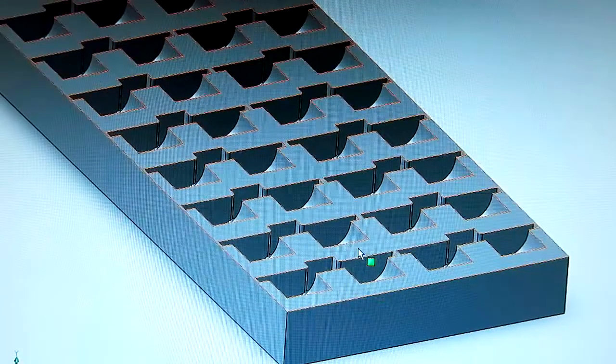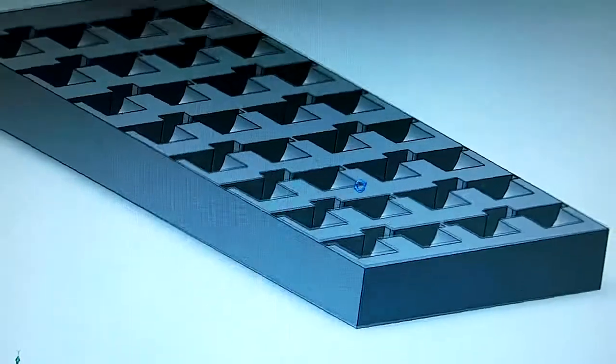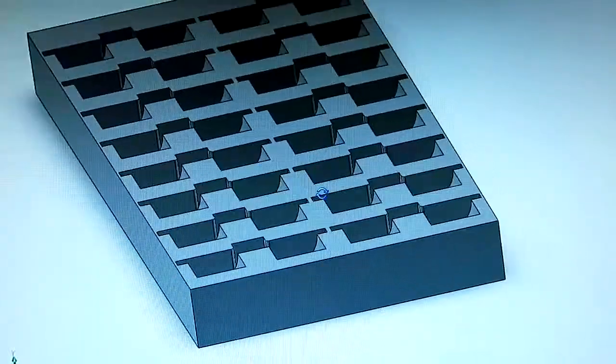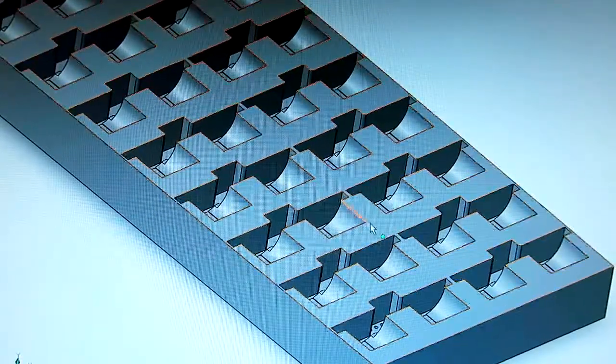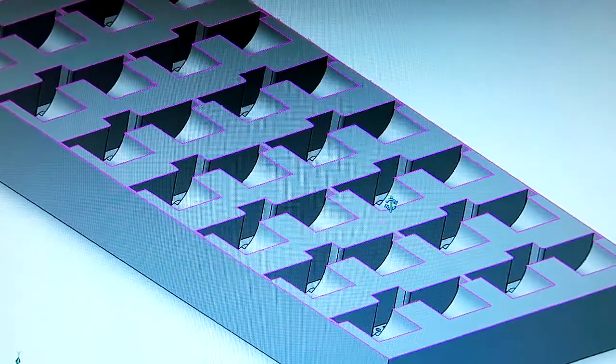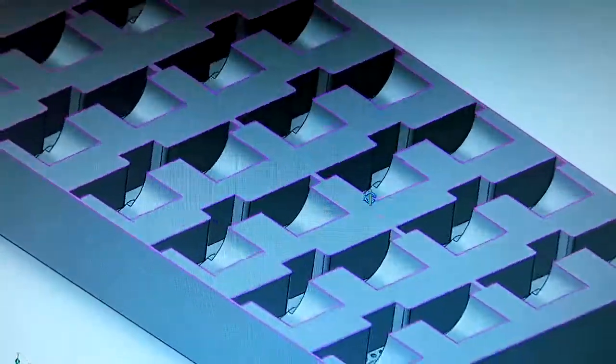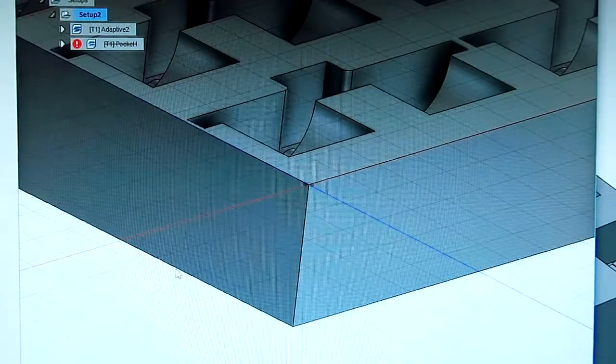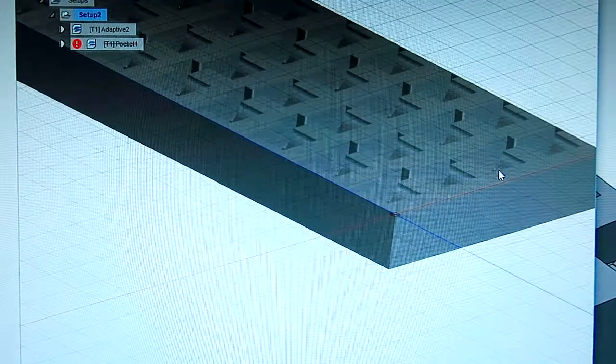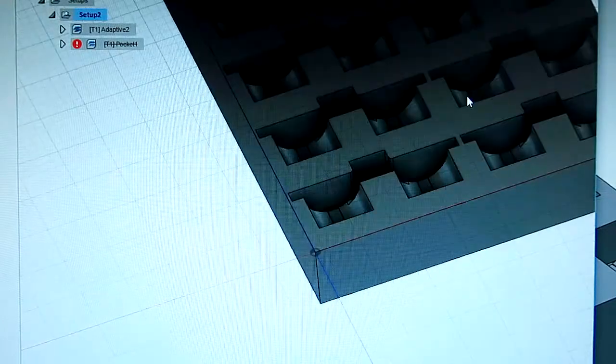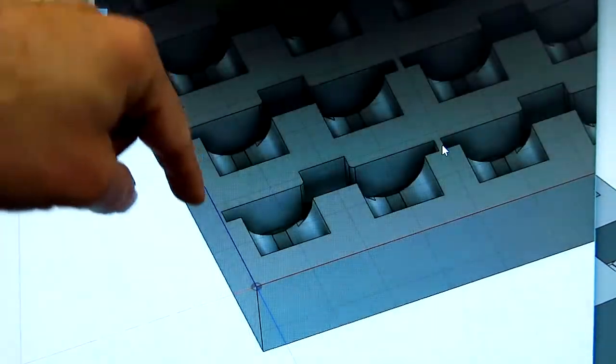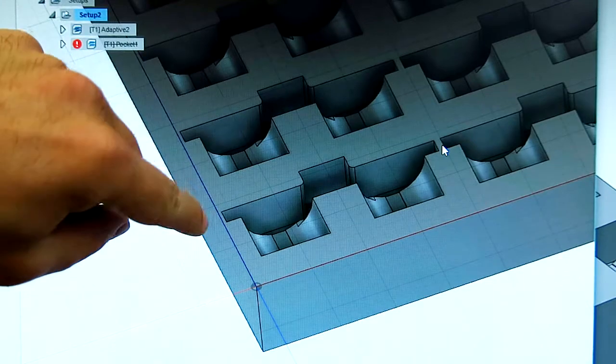So there's a real challenge in going from this drawing in SolidWorks, which is something I'm pretty experienced with, and it wasn't too hard to create this. But there's a real challenge in going from this to telling the CNC machine how to actually cut this thing out. You use software called CAM software, C-A-M, which basically creates the toolpath that the cutter is going to follow as it goes and cuts things out.